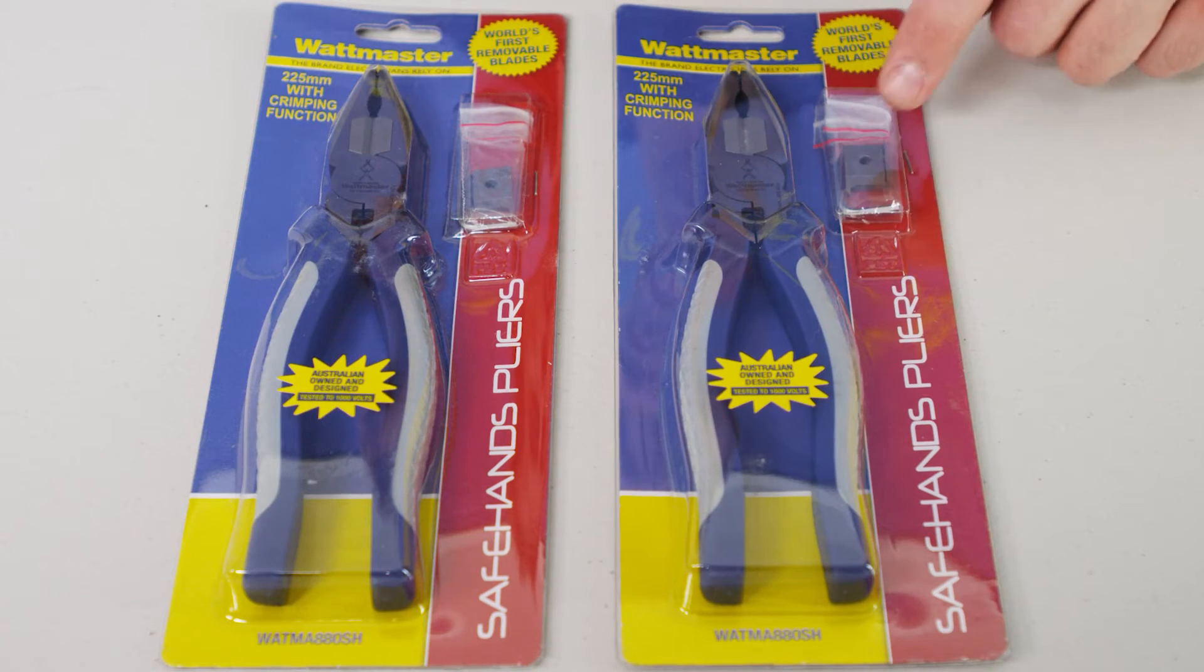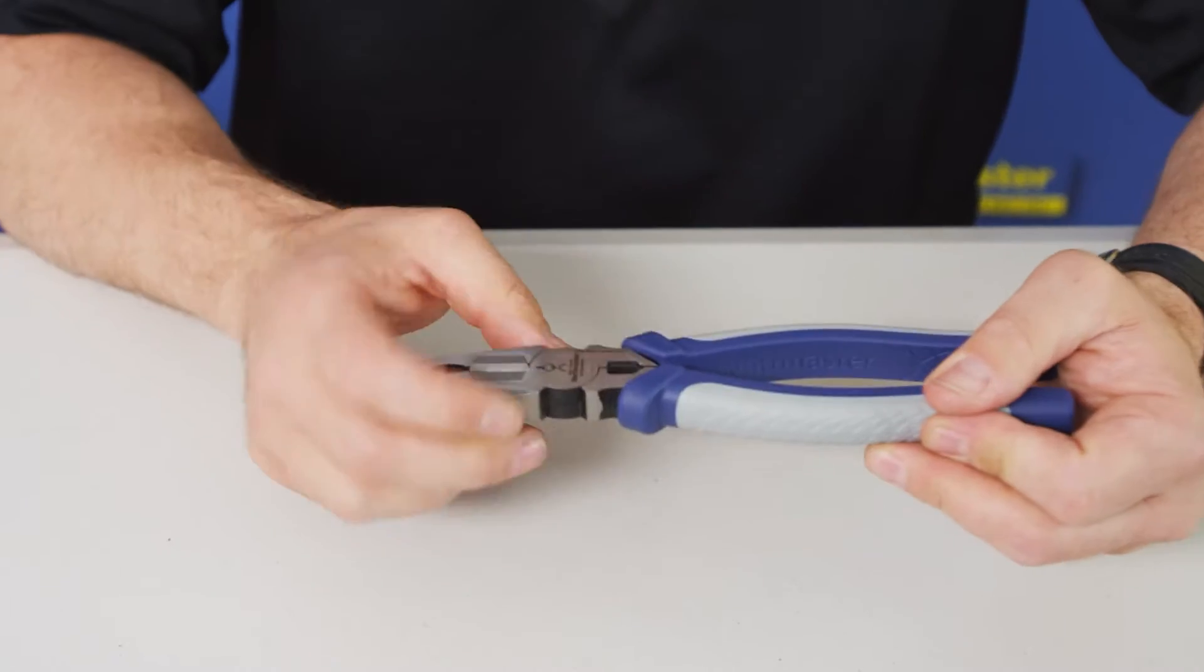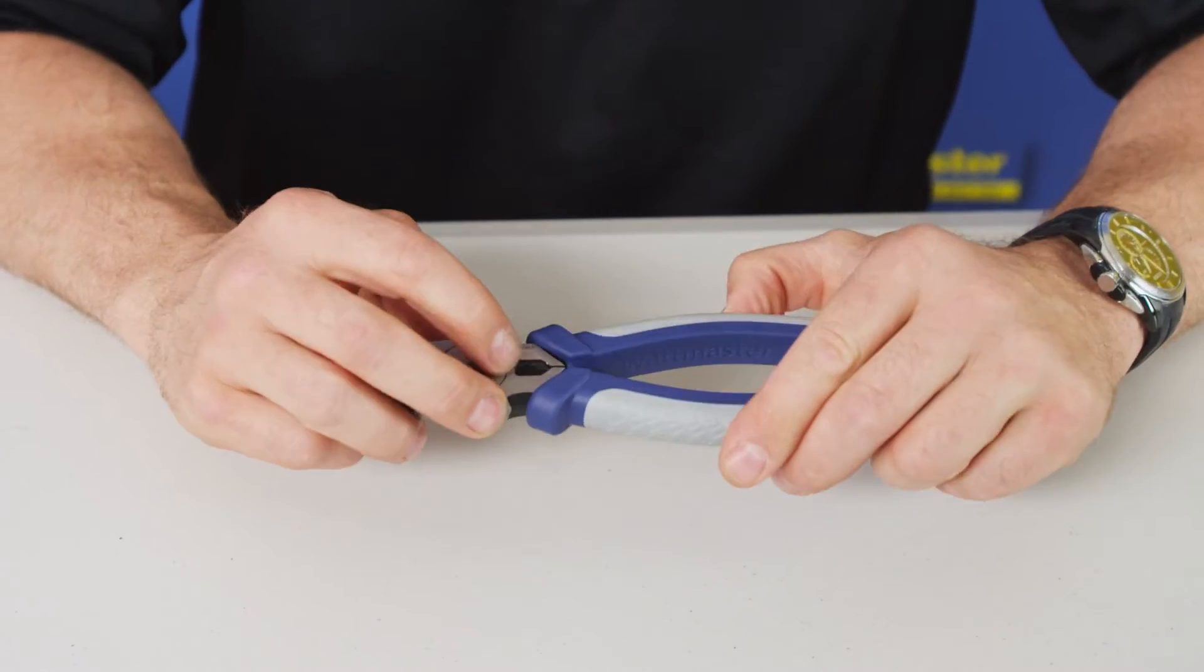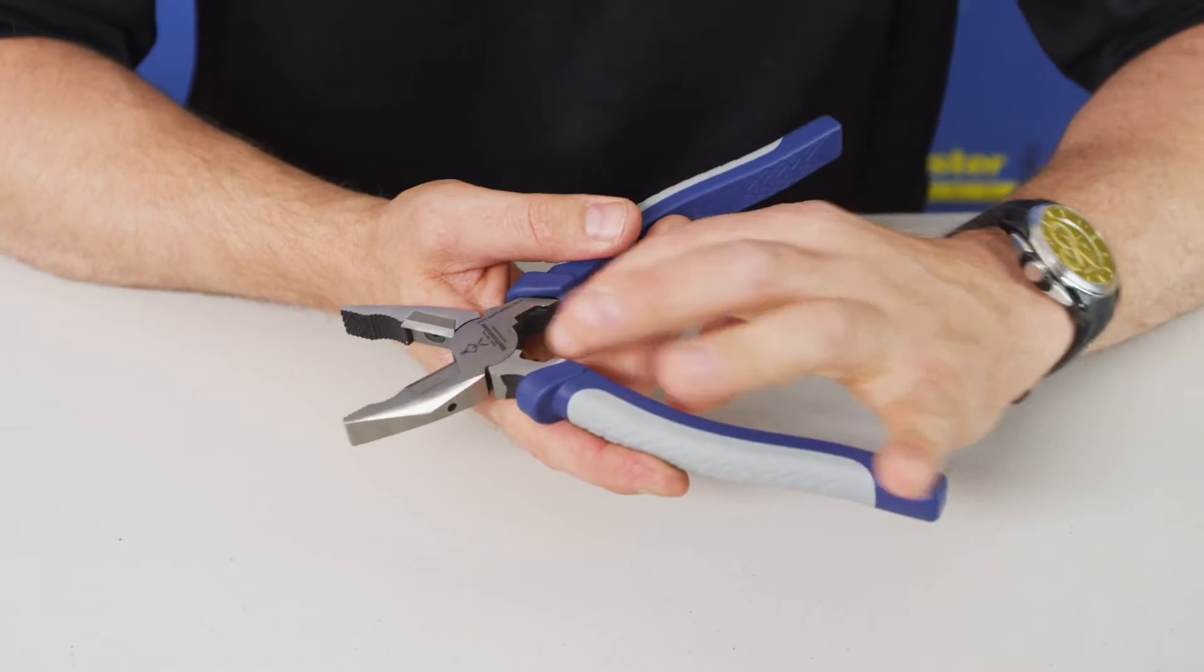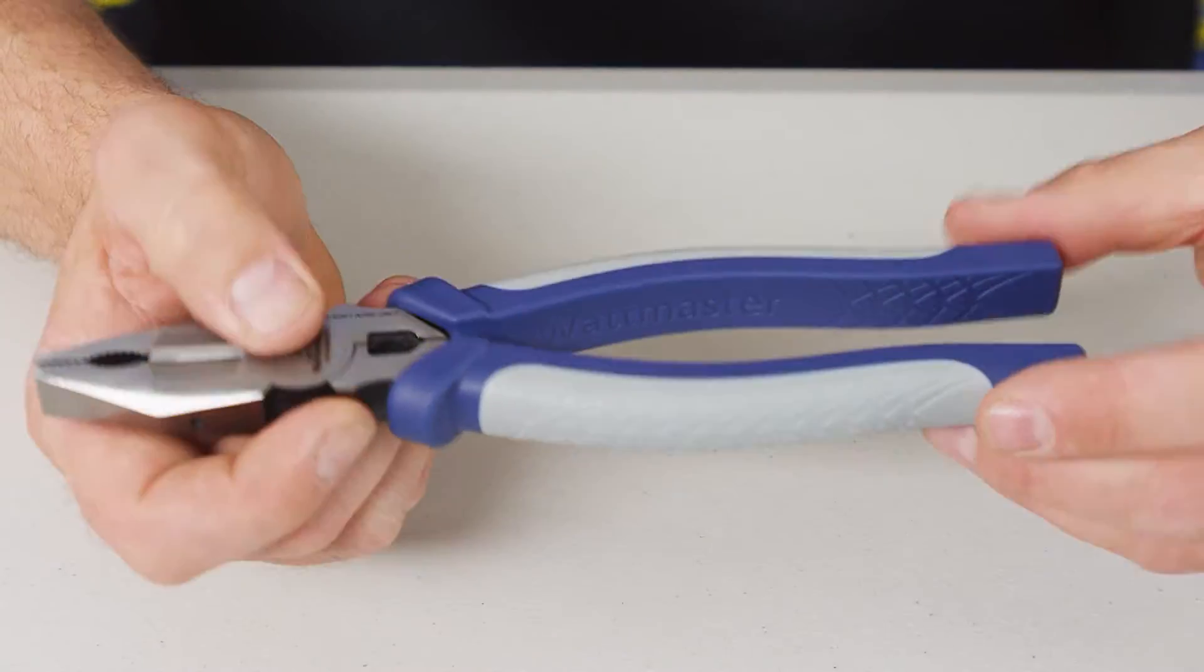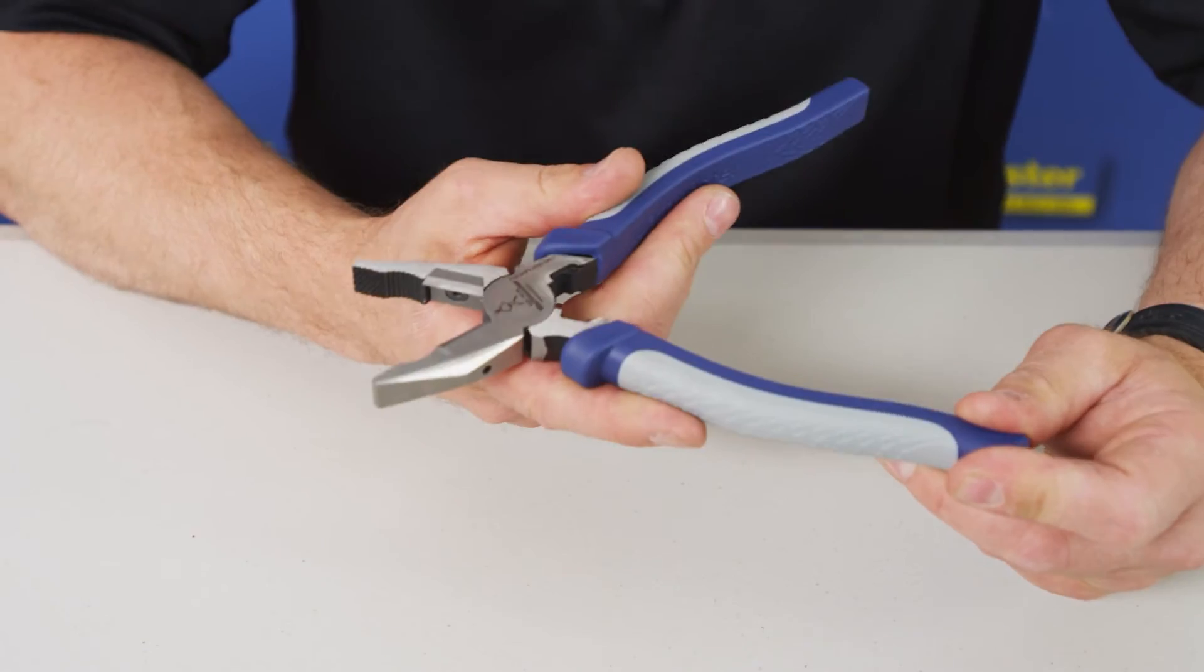They actually come with an allen key and a spare pair of blades. Our second feature is a crimper behind the pivot.